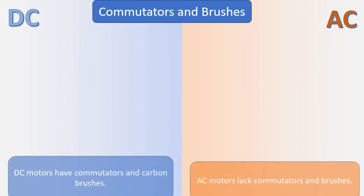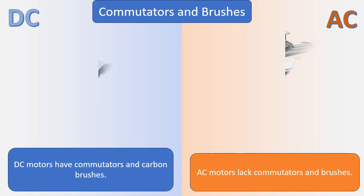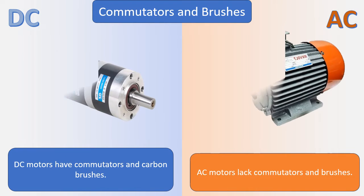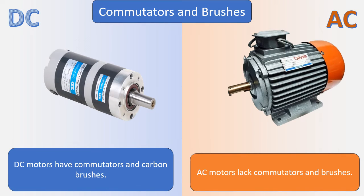Commutators and brushes: AC motors lack commutators and brushes, whereas DC motors have commutators and carbon brushes.